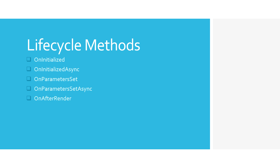The next event which gets called is the OnAfterRender event. This is an event which is like the last chance to check if you have all the data you were trying to pull from the database or API. If you don't have that data, you can re-render your page and keep calling those APIs until you have the data. There is also an asynchronous version of this function.